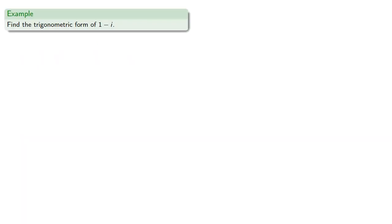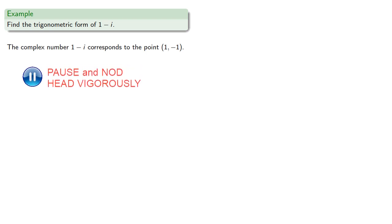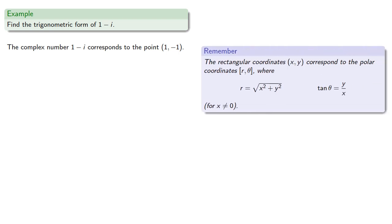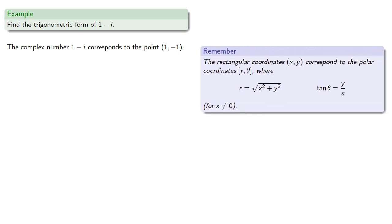For example, we might try to find the trigonometric form of 1 minus i. The complex number 1 minus i corresponds to the point (1, -1). Now, we want to convert the coordinates from rectangular form into polar form. Remember our fundamental relationship. The complex number 1 minus i corresponds to the point (1, -1), and so we find r.